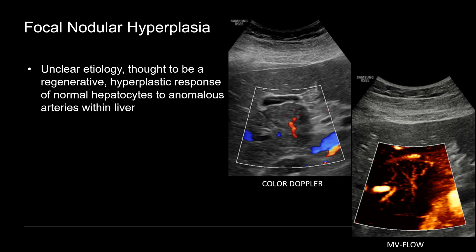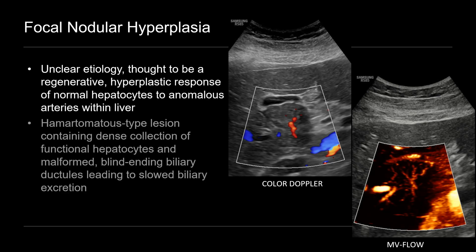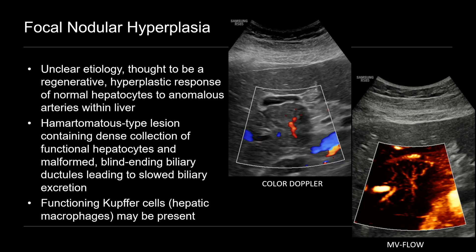It's thought to be a regenerative hyperplastic response of normal hepatocytes to an anomalous artery or arteries within the liver. So you can think of it as a hamartomatous-type lesion that contains a dense collection of functional hepatocytes, but also malformed, blind-ending biliary ductules, which leads to slowed biliary excretion. And that explains the imaging appearance of FNH on other imaging modalities such as MRI. FNH can also sometimes contain functional Kupffer cells, which are hepatic macrophages.